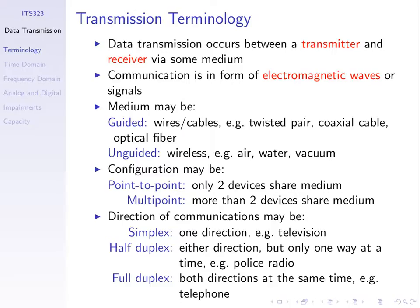We'll look in the next topic about these media in detail: copper wires called twisted pair, the LAN cables; coaxial cable which you may use for cable internet or cable TV; and optical fiber. So examples of guided media are wires or cables — think of the signal as guided within the conductor or within the wire.